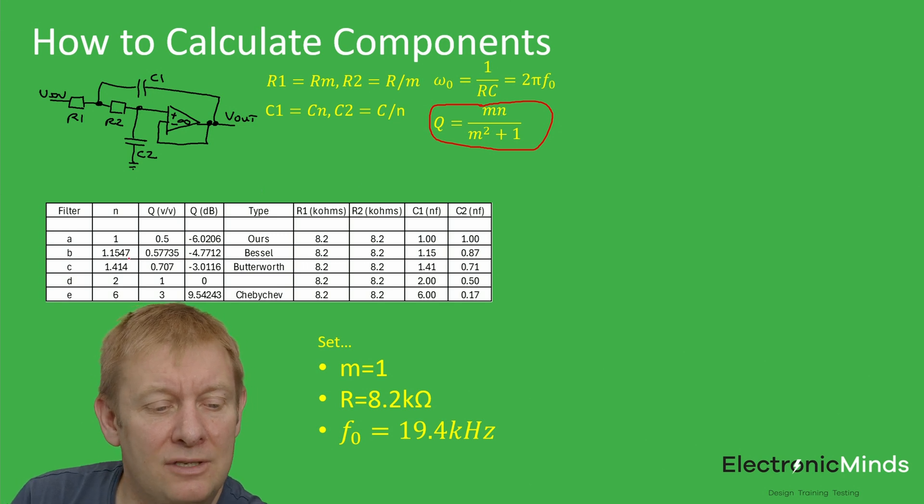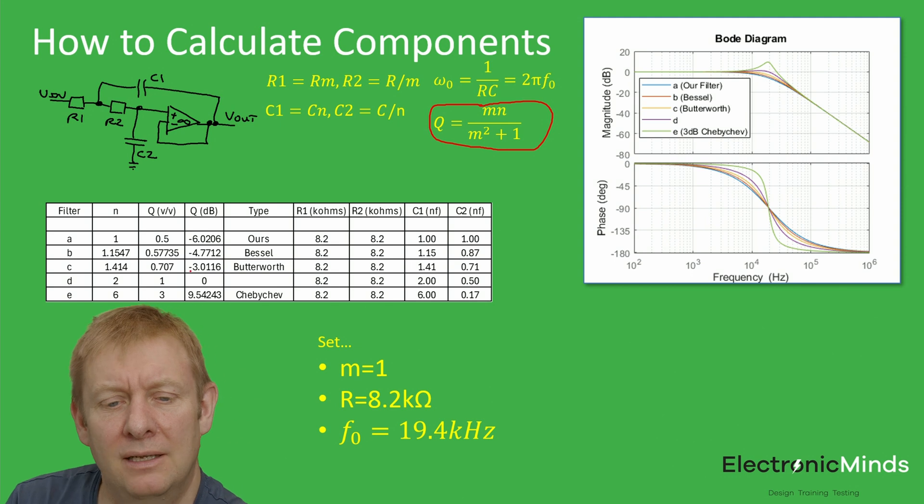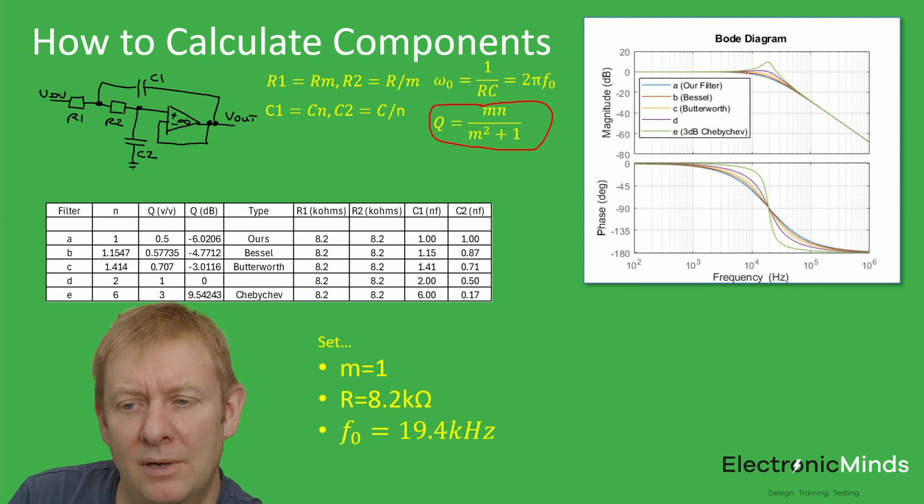Let's tabulate out different filter characteristics with increasing values of n. Filter A sets n to one, so Q is 0.5—that's the filter we built and tested in the lab. As we increase n, the capacitor values differ and Q starts to climb. If we plot these filter characteristics against one another, you see some interesting stuff. Filter A has a relatively calm transition from passband to stopband, but the transition band is relatively wide. Some designs require a much sharper transition, and if you can live with a bit of gain peaking, the Chebyshev filter allows a narrower transition band at the expense of that gain peaking.